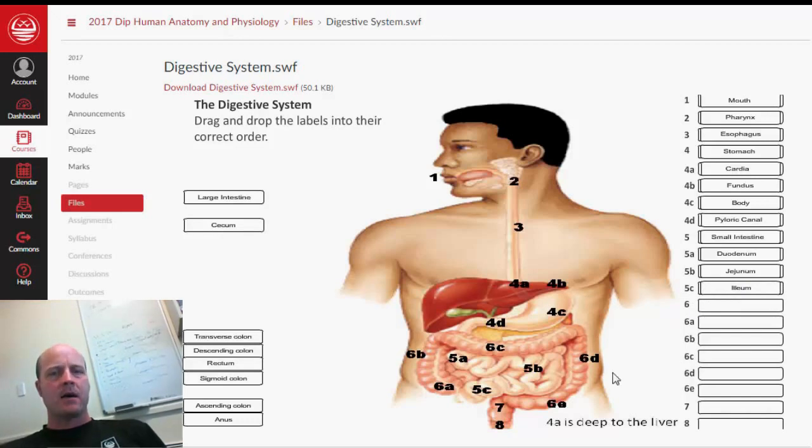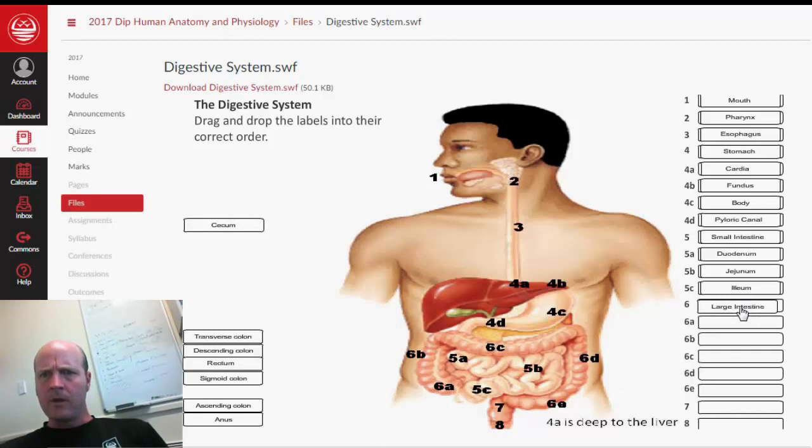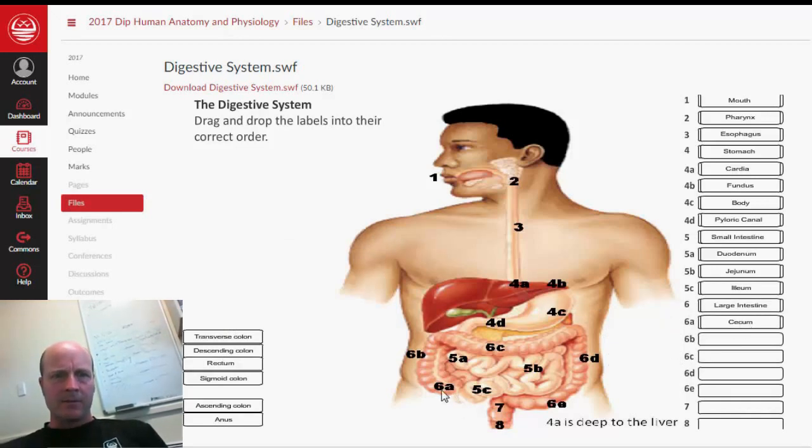The first part of the small intestine is the duodenum. And then it enters the jejunum. And finally, the ilium.